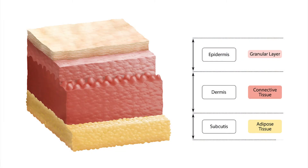Skin is the largest organ of the body. It contains blood vessels, sensory receptors, nerves, and sweat glands. It's made up of several layers and varies in thickness from about one and a half to four millimeters or more. Skin is the first line of defense against infection, as long as it's intact.